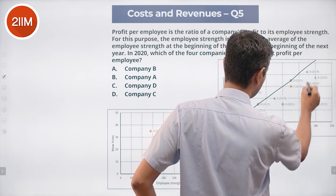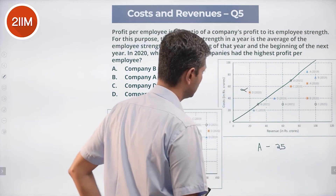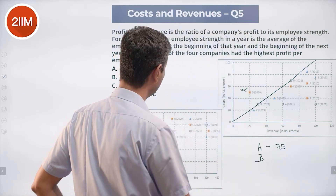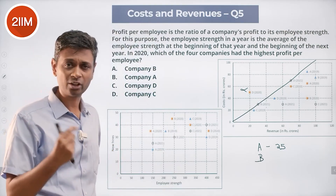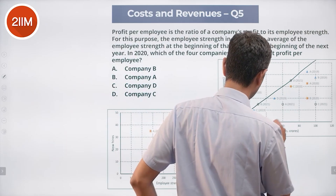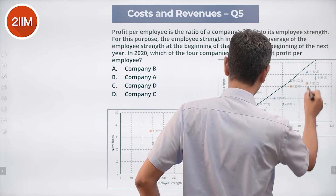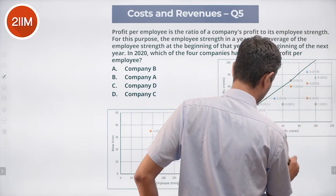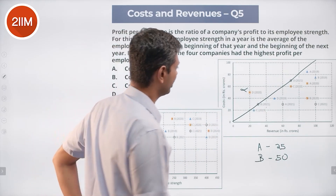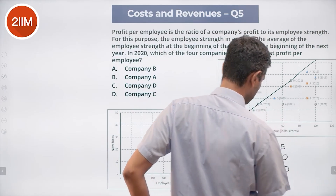B in 2020: profit is 90 minus 40 = 50 crores — that's huge. C in 2020: profit is 70 minus 60 = 10 crores — very less. B is already five times as much profit as C, so I'm already thinking B. Now let's check employee strength.